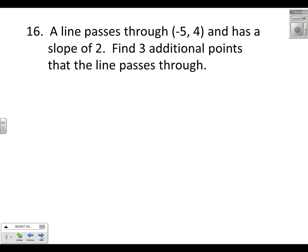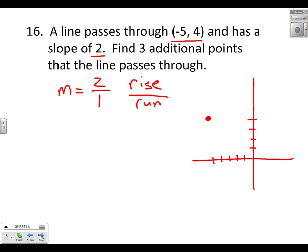Okay, a line passes through a given point and has a given slope. Find three additional points that the line passes through. We could, of course, if we had some graph paper, we could plot the first point: negative 5, 4. And we could plot that point. And then we could build our graph by running with a slope of 2 or 2 over 1, and that of course is rise over run. So we could rise up two points and we could run one spot, and we could create a new point and come up with the coordinates with that.